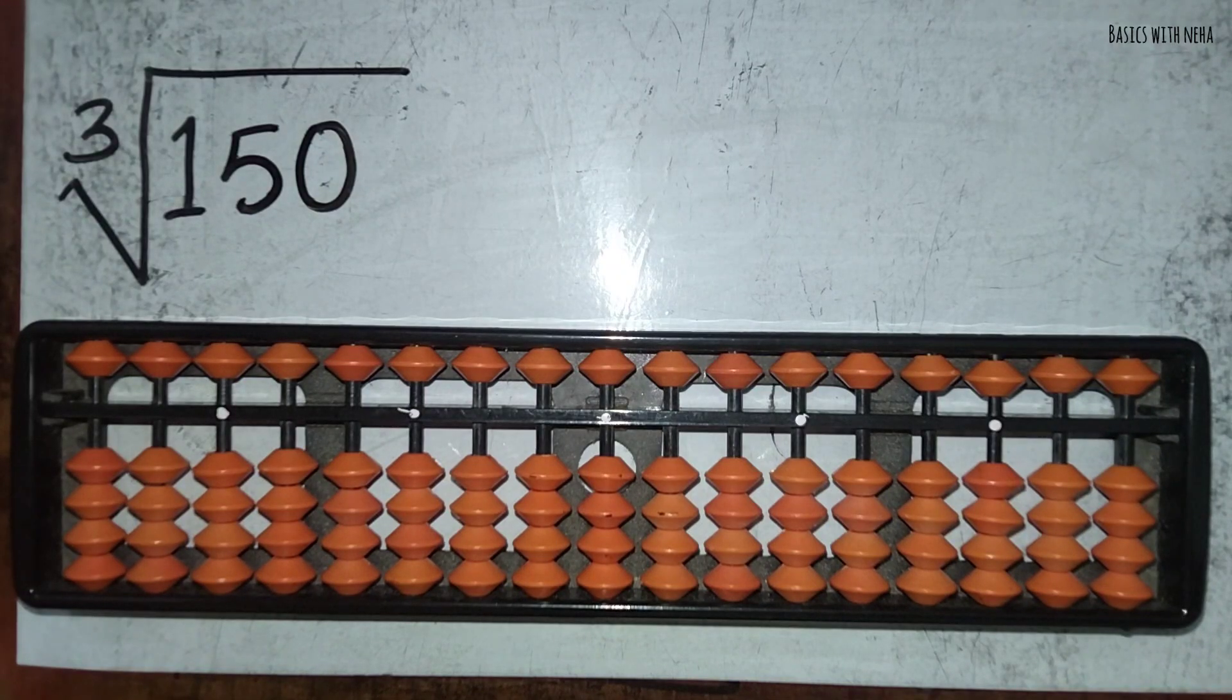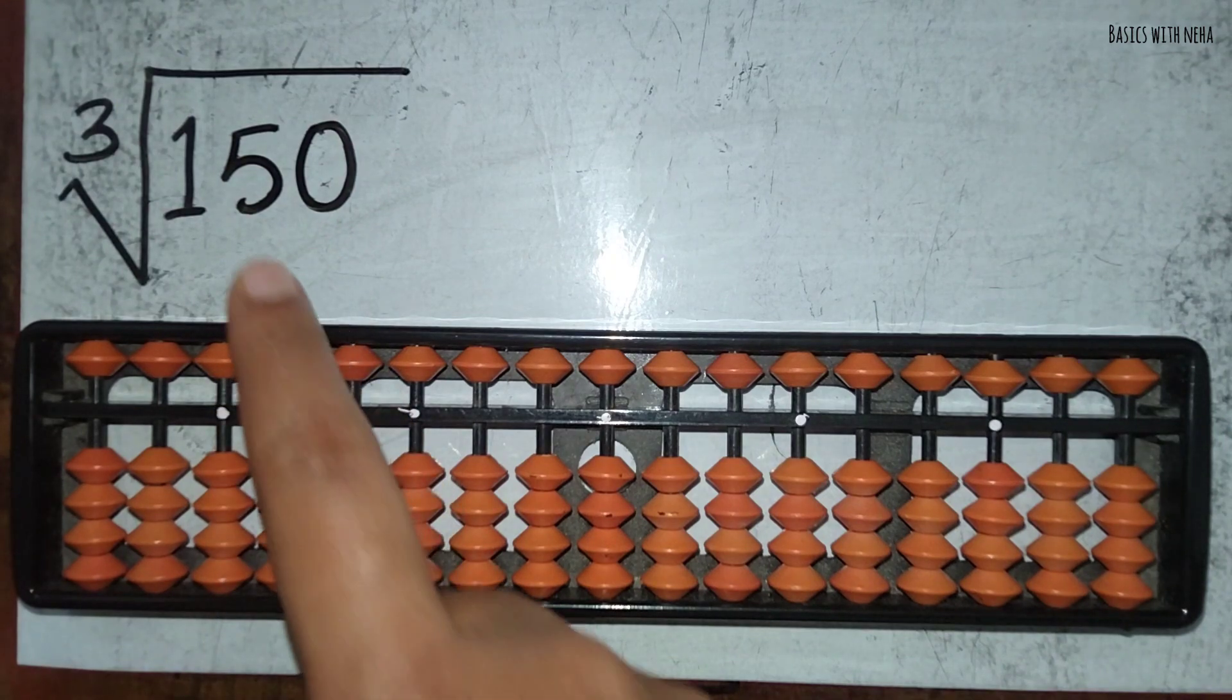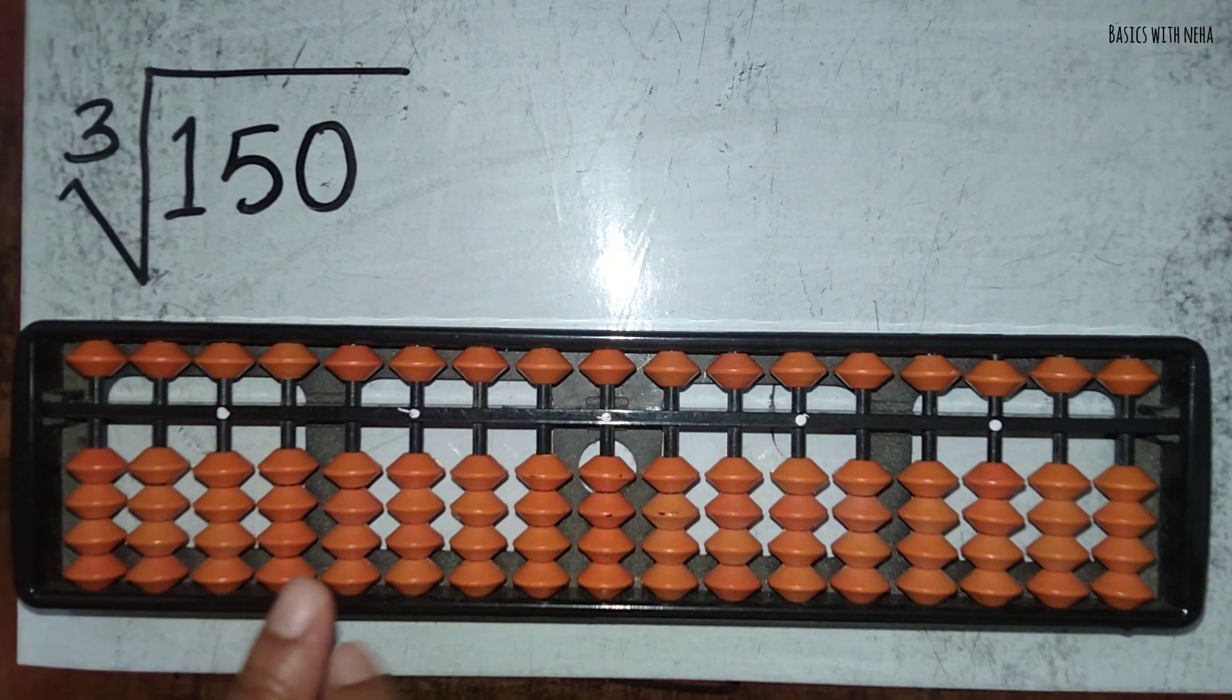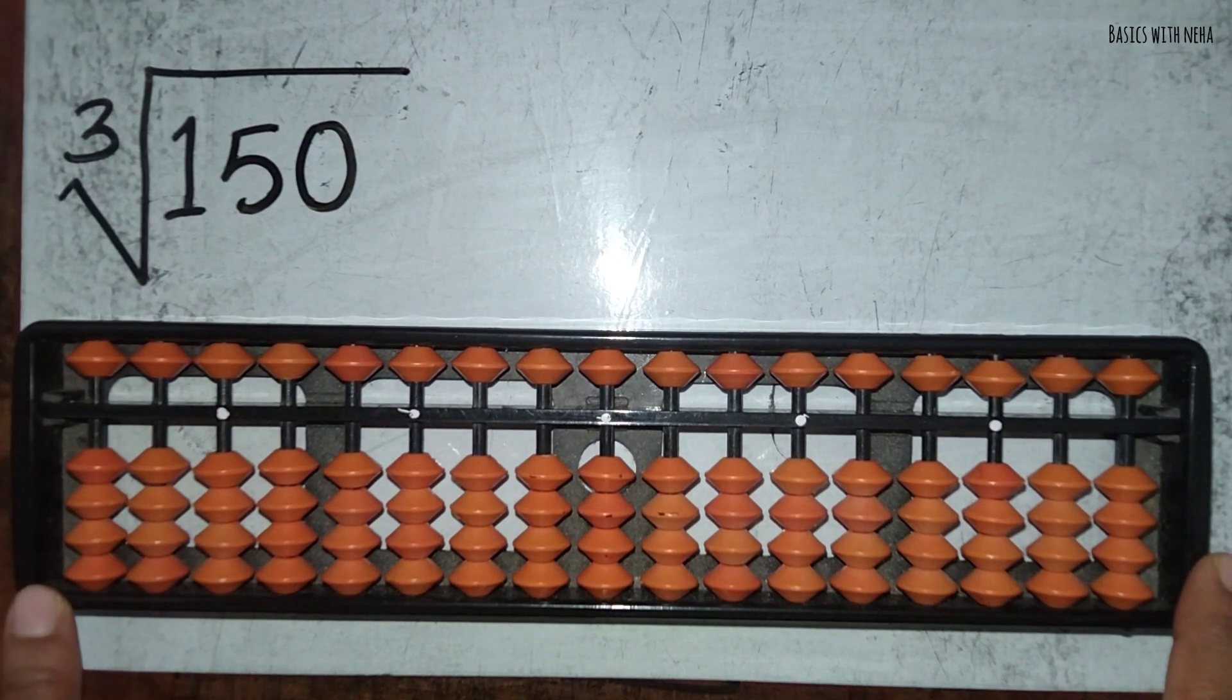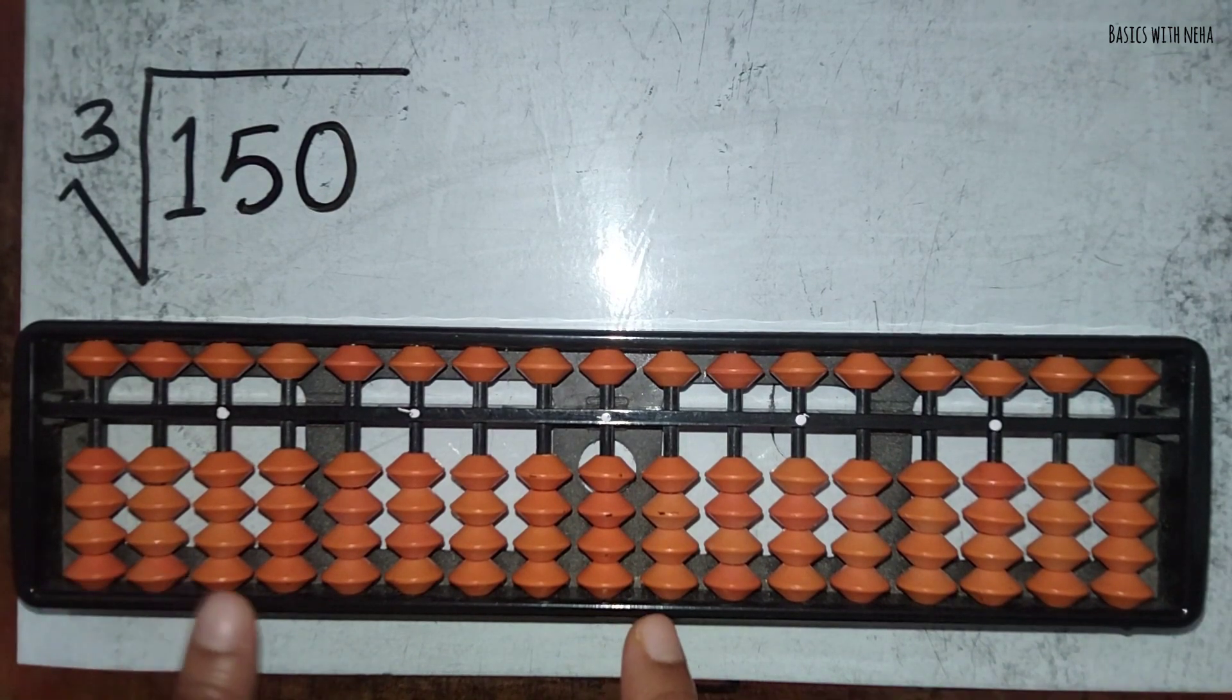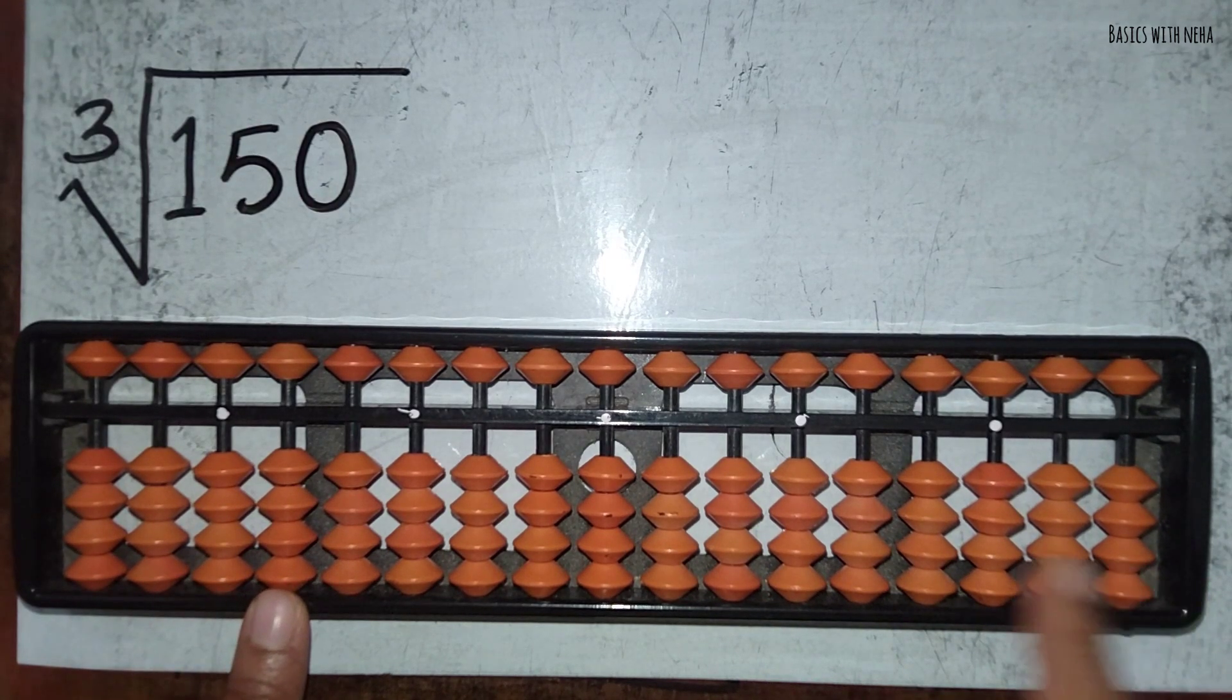Hello, welcome back to my YouTube channel. Cube root of 150. When we do the cube root of any number in the abacus tool, we have to divide the tool into three parts. This is a 17-rod abacus, so I'm going to divide it like four rods, six rods, and seven rods.